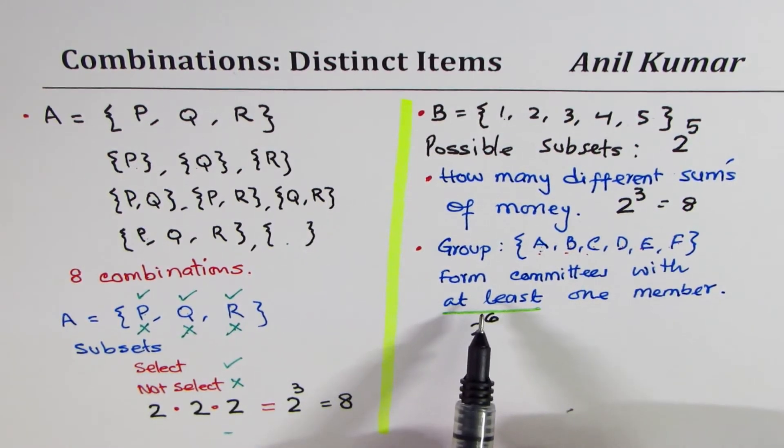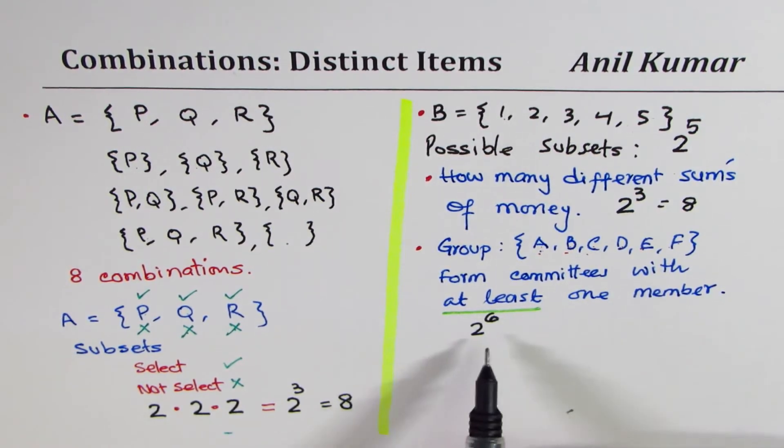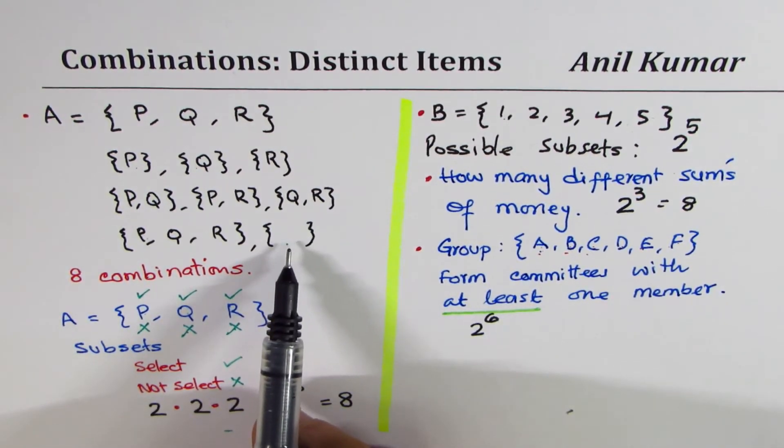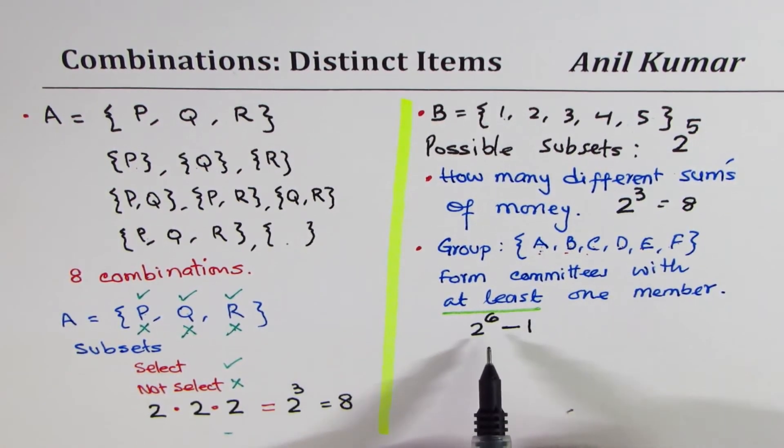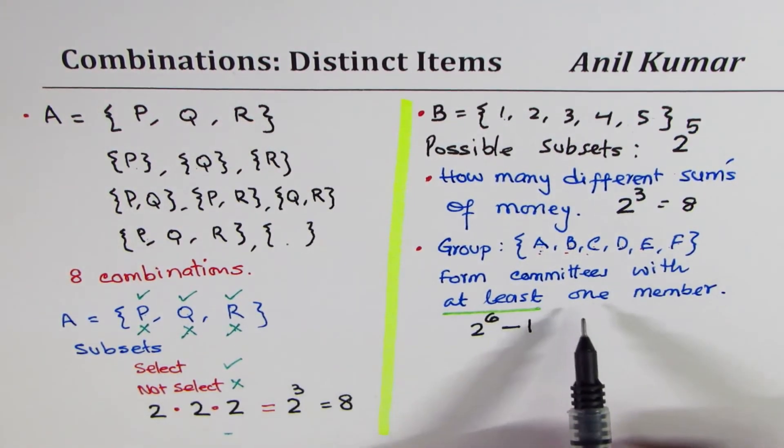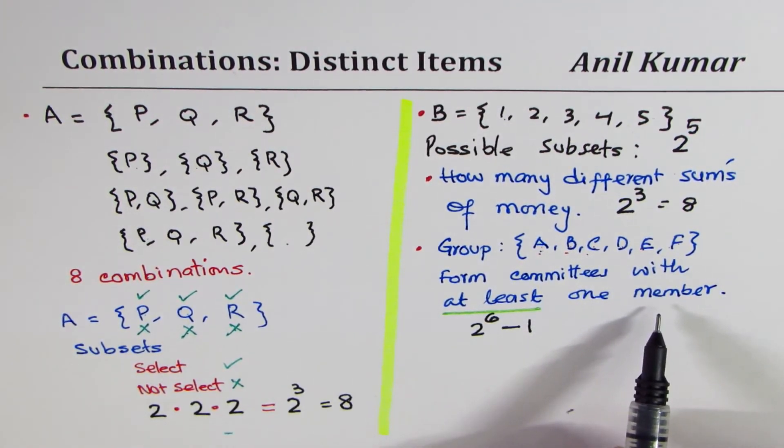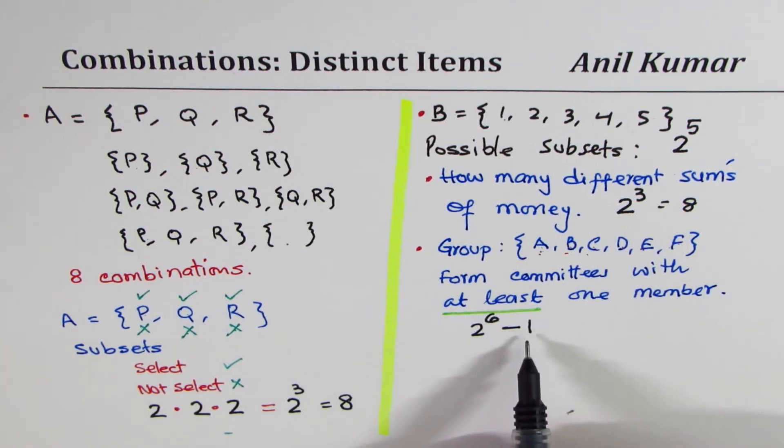However, the question is, form committees with at least one member. And therefore, in this case, that null set is not included. So we'll have to take away the null set. Do you agree with me? So the answer will be 2 to the power of 6 minus 1. So when it becomes very important that at least one member should be there, I mean, we have to select an object. In that case, from 2 to the power of n, we have to take away 1. So I hope you get the concept.